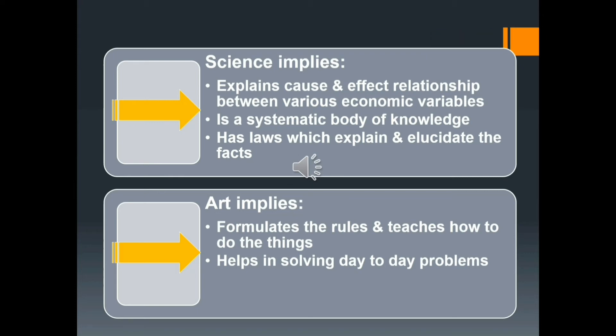They are not precise and final or exact and definite as the laws of physical sciences. Therefore, the method of economics is scientific, but it cannot be precise as the physical sciences because the human and social behavior is complex and unpredictable.